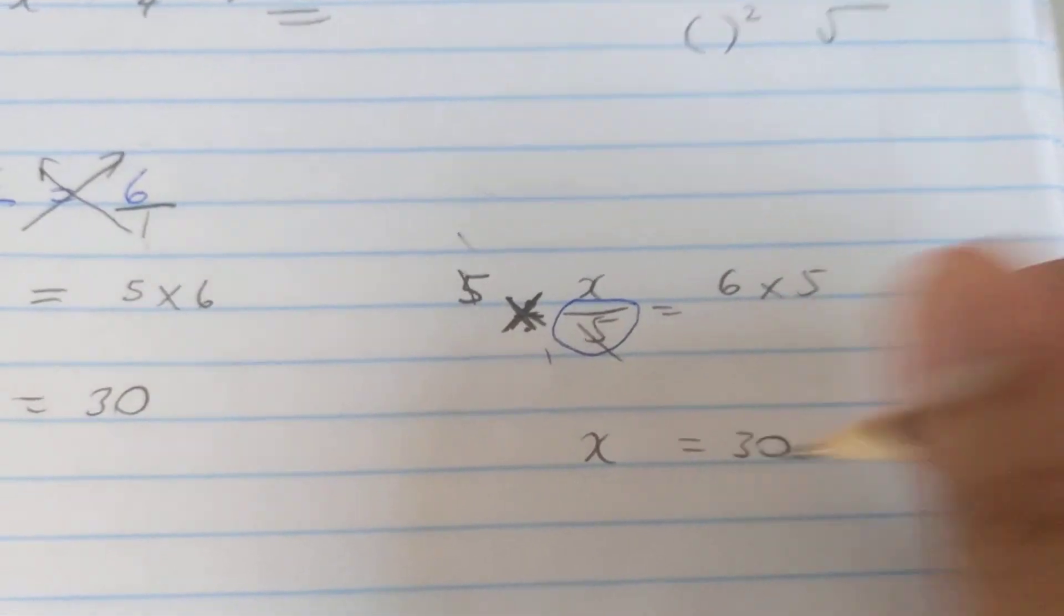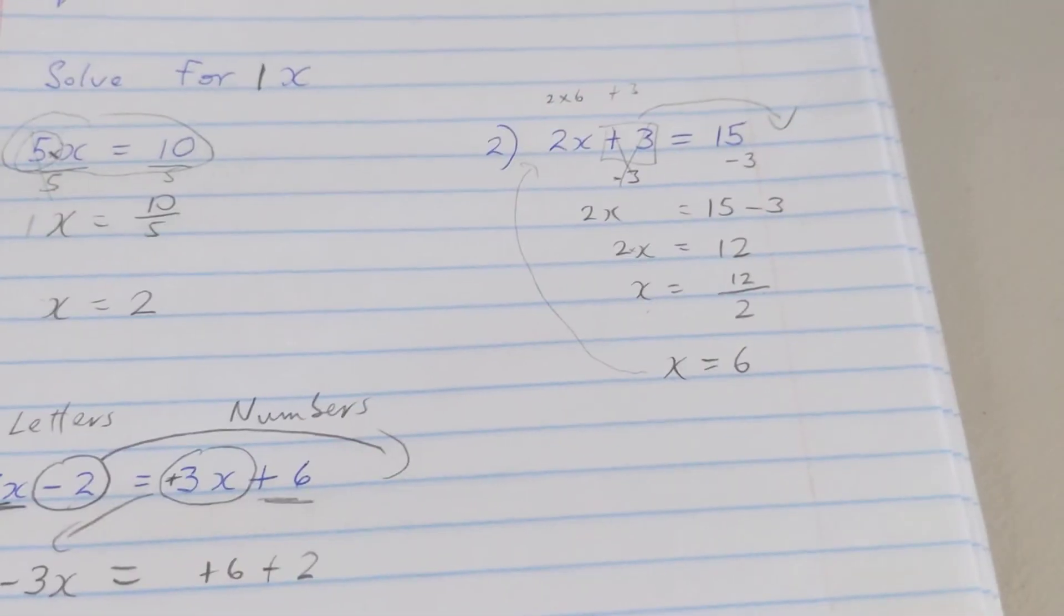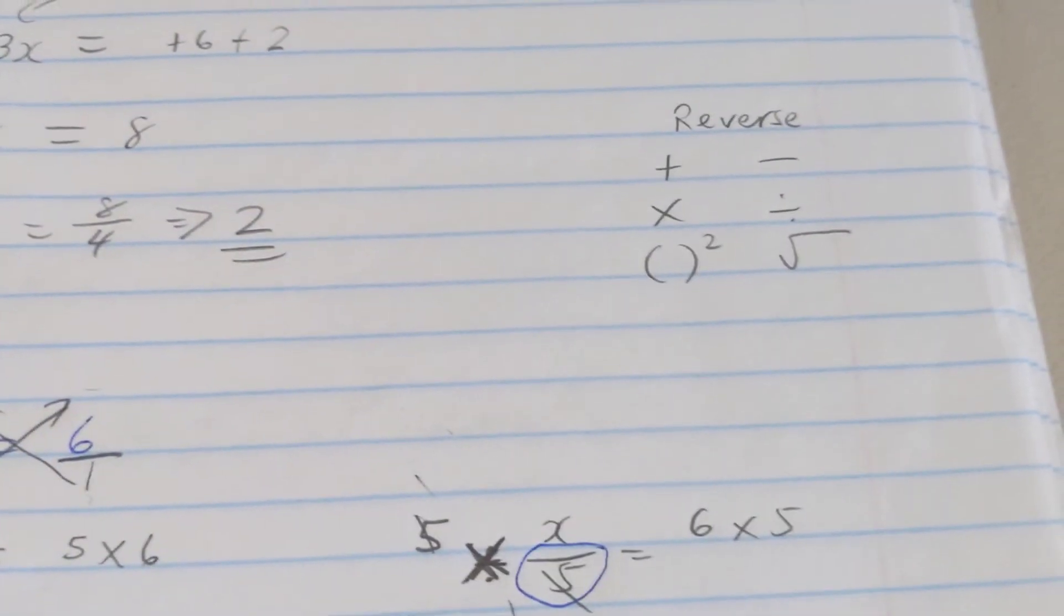So 6 times 5 is 30. You realize we still get back to the same answer, but it's just how you prefer to do it. These are some of the different ways you'll encounter in solving.